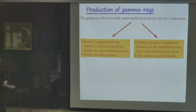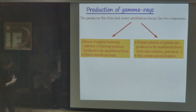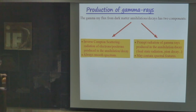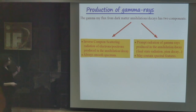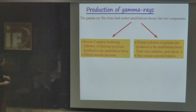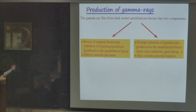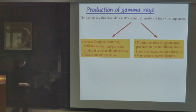The first component is inverse Compton scattering. Dark matter annihilations could produce electrons and positrons. These electrons and positrons could collide with photons of the interstellar radiation field — from the cosmic microwave background, from starlight, from thermal radiation of dust. An energetic collision of a 1 TeV electron with a low-energy photon could produce a photon with energy of several hundreds of TeV, upscattering photons to multi-TeV energies. The spectrum is smooth and calculable.